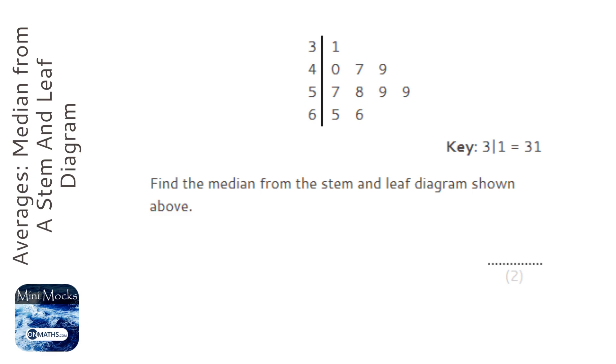So I'm going to cross out the smallest, which is 31 here, and the biggest, which is 66. Then I'm going to cross out the second smallest, which is 40, and the second biggest, which is 65.